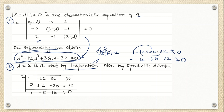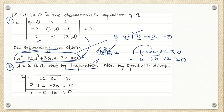Then we try lambda equals 2. Substituting gives: 2 cubed is 8, minus 12 times 4 is 48, plus 2 times 36 is 72, then minus 32. So 8 minus 48 plus 72 minus 32 equals zero. So lambda equals 2 is one root found by inspection method.